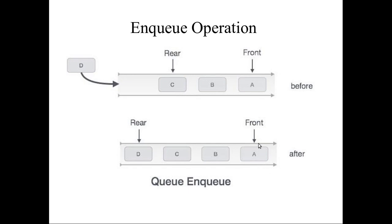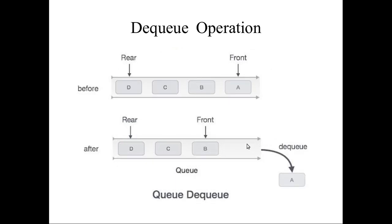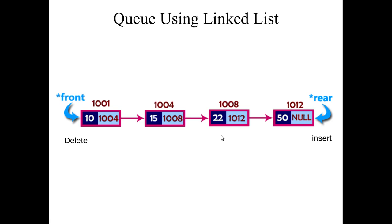If you want to delete data from this queue, by default A will be deleted. If you give the dequeue (dq) operation, the front element will be deleted automatically, because the queue follows first in first out. A is the first element that entered, so it will be deleted first. After the dq operation, A will be deleted and the queue will look like this.